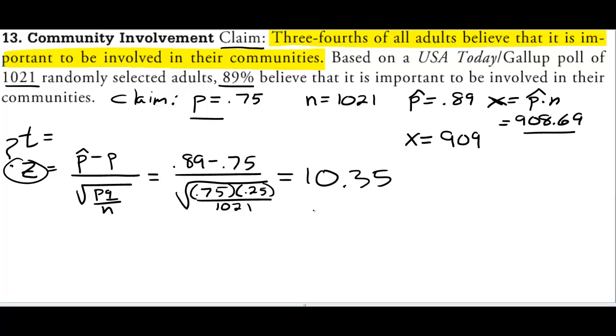If they had asked for us to write the null and alternative here's our null p equals 0.75. Here's our alternative p not equal to 0.75 because there was nothing specifically that told us we should be doing a one tailed on either greater or less than so we're just going to default to that.